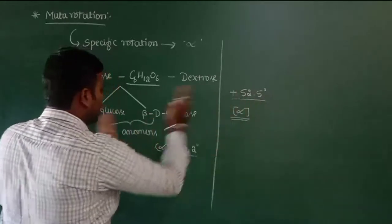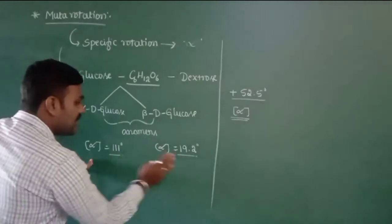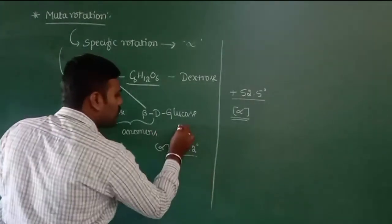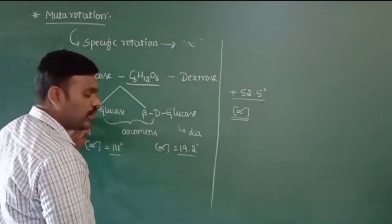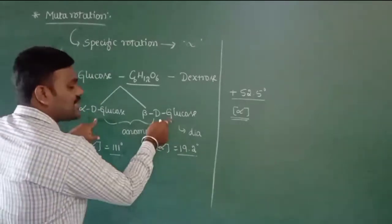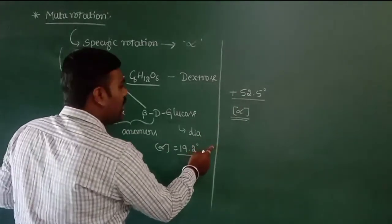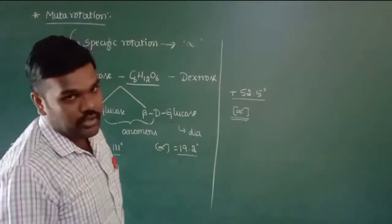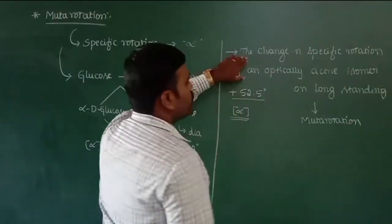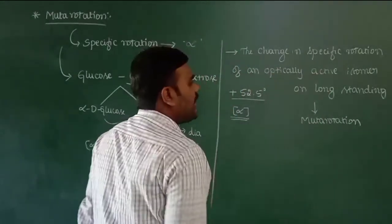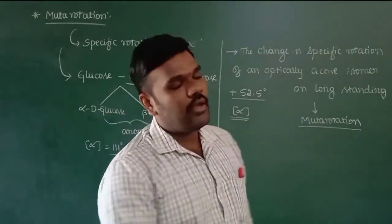Both alpha-D-glucose and beta-D-glucose are changing. Both are stereoisomers — specifically, alpha-D-glucose and beta-D-glucose are diastereomers, meaning they are not superimposable mirror images of each other. But still, they exhibit a specific rotation whose value changes when allowed to stand, and that is what we call mutarotation. The simplest definition: the changing specific rotation of an optically active isomer on long standing is simply called mutarotation.